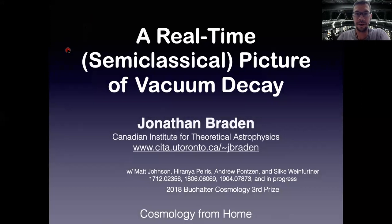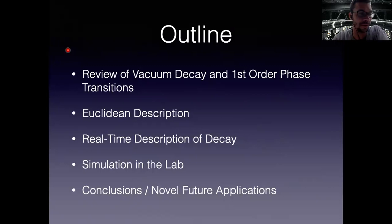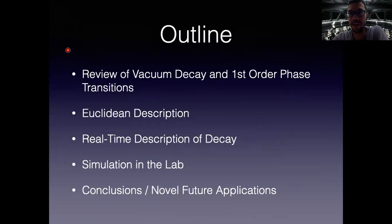Today I'm going to tell you about some work I've been doing on developing a real-time picture of vacuum decay. I'll start by reviewing what I mean by vacuum decay and first-order phase transitions, then briefly review the Euclidean bounce formalism, describe our real-time description, mention a possibility to experimentally build a system that undergoes false vacuum decay in the laboratory, and then some quick conclusions and future applications.